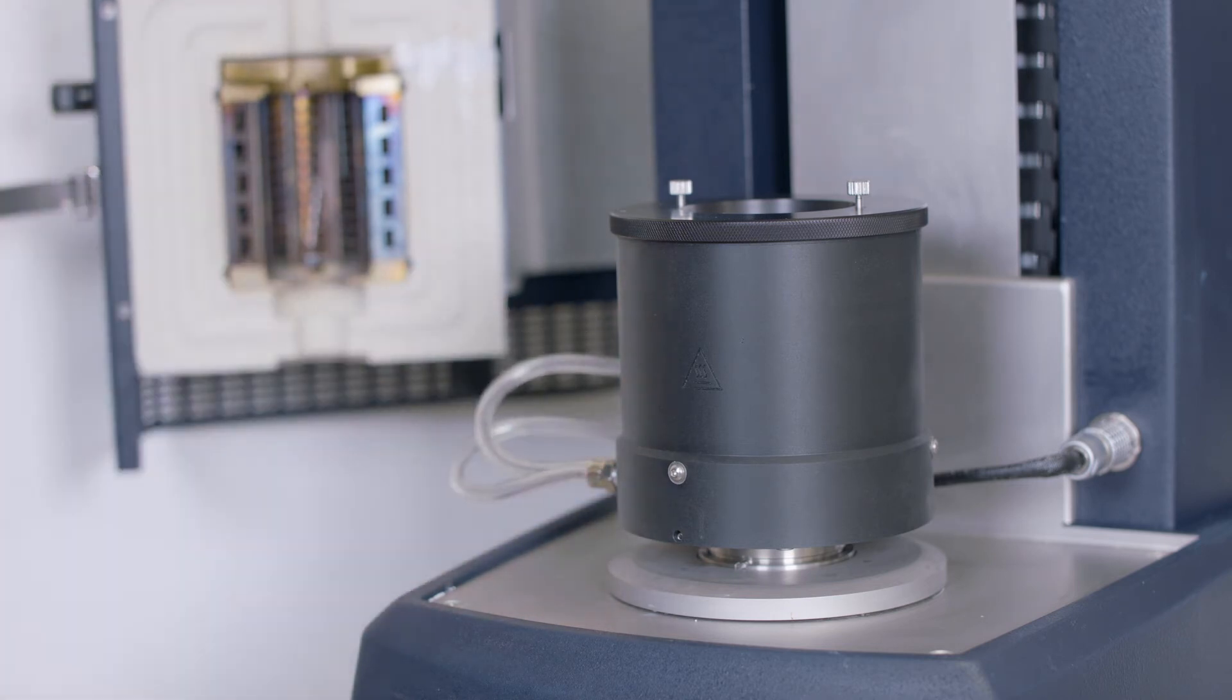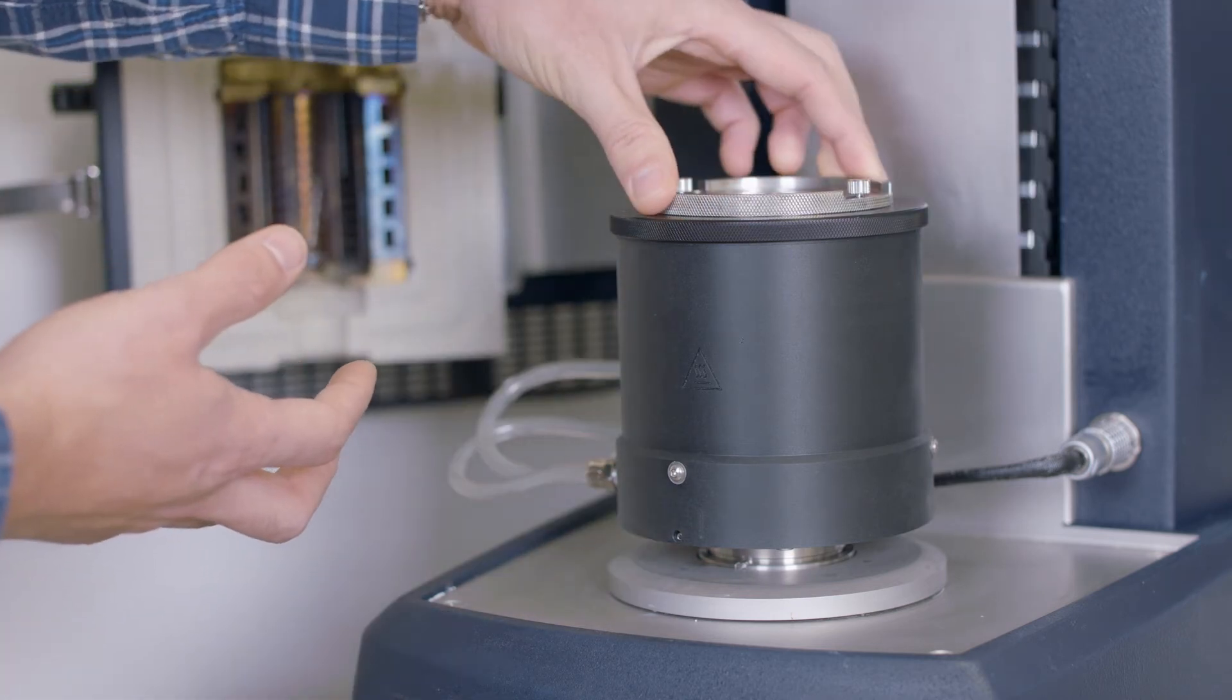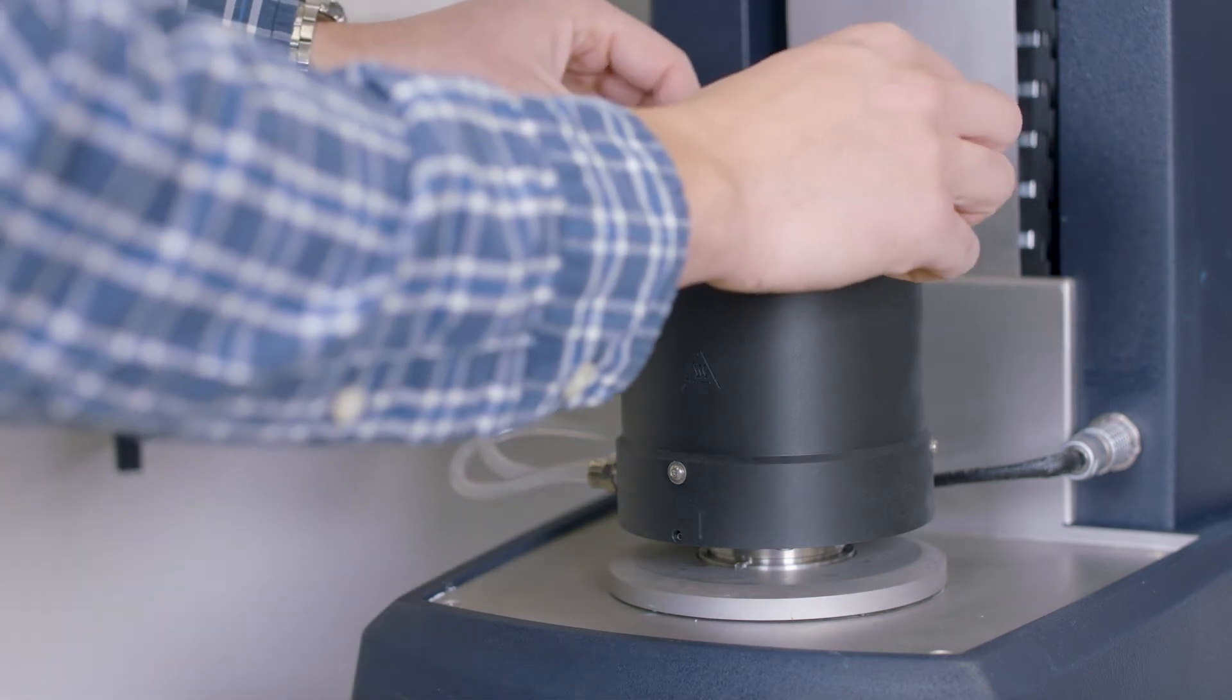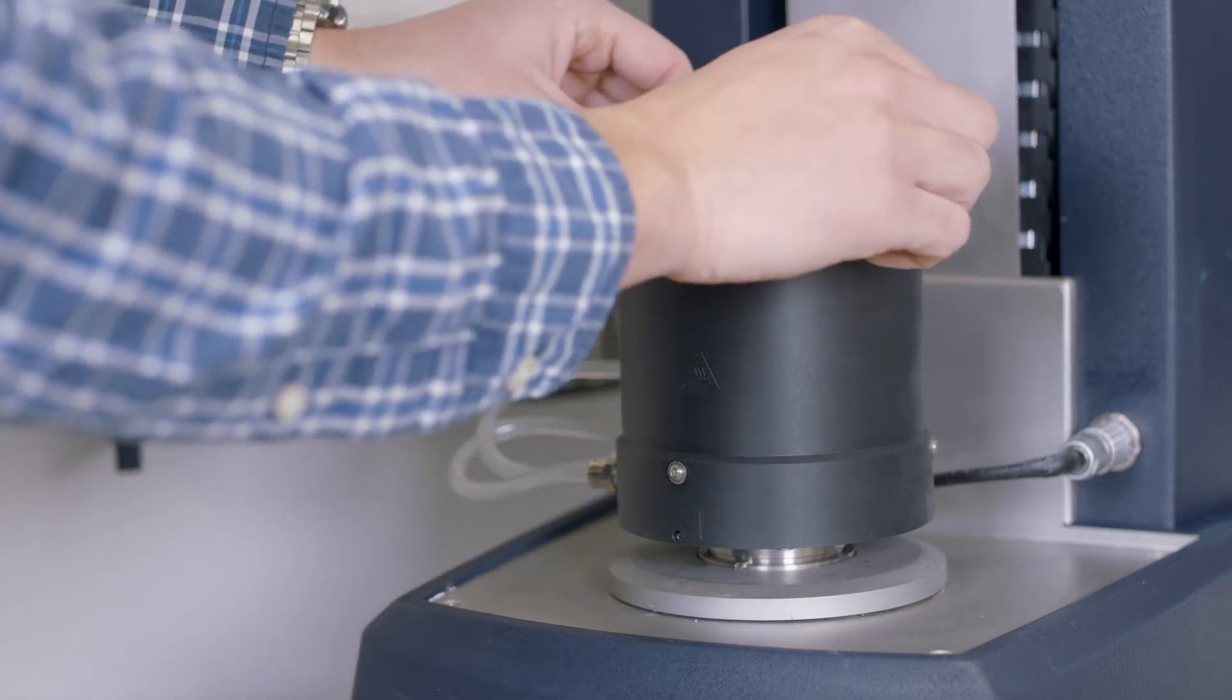Next we will install the concentric cup into the Peltier jacket by placing it inside and tightening the thumb screws.